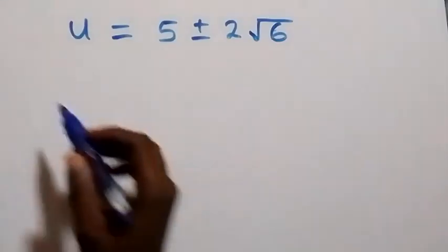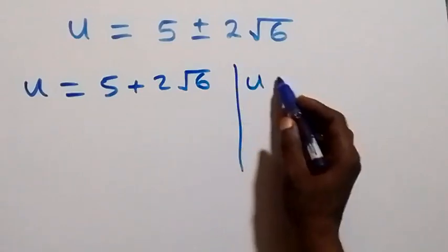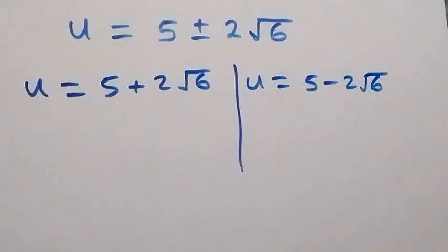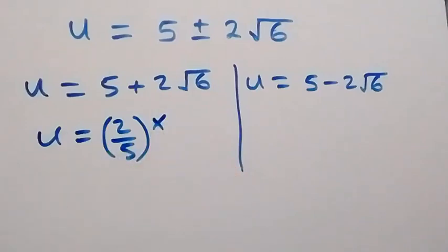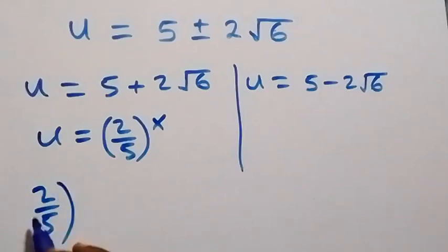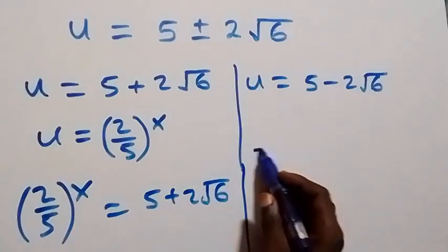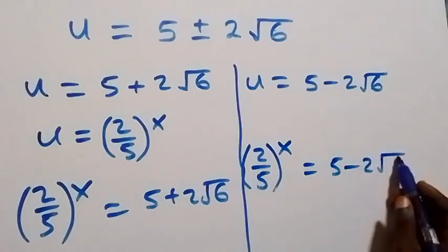We have two values for u: u equals 5 plus 2 root 6, or u equals 5 minus 2 root 6. Recalling that u was defined as (2 over 5) raised to power x, we now have (2 over 5) raised to power x equals 5 plus 2 root 6, and also (2 over 5) raised to power x equals 5 minus 2 root 6.